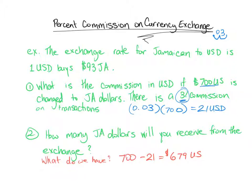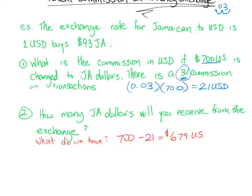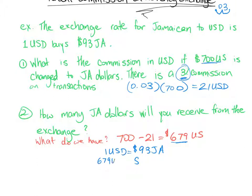Now we'll set up our proportion to exchange that money. The exchange rate is 1 US dollar equals 93 Jamaican dollars. We're going to exchange 679 US dollars, so we line up US dollars with US dollars: 679 US dollars on one side.